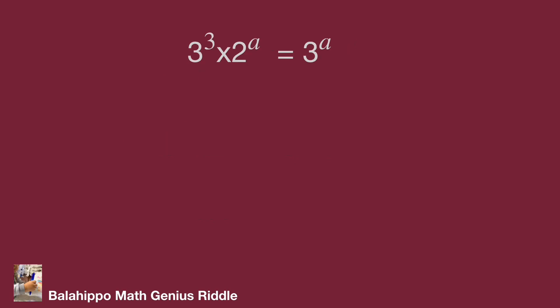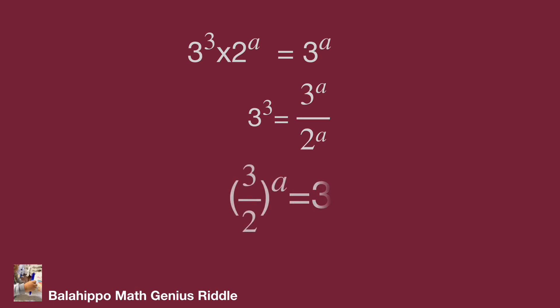Next, I divide 2 power of a on both sides of the equation, giving 3 cubed equal to 3 power of a over 2 power of a. For easy explanation, swap the items on both sides and change to the quantity 3 over 2 power of a equal to 3 cubed.